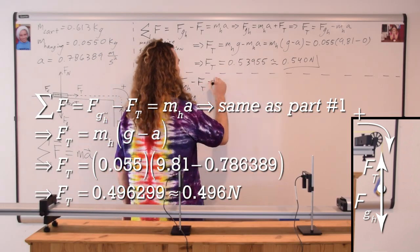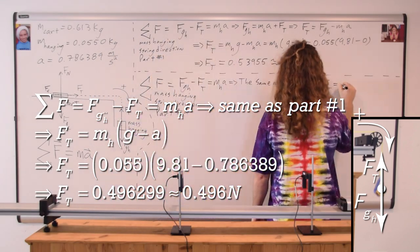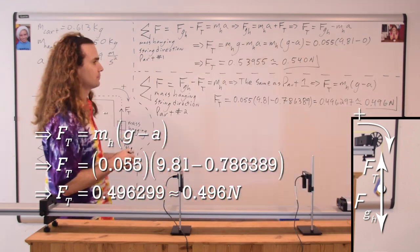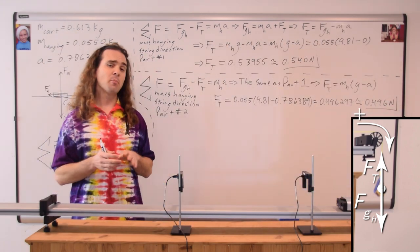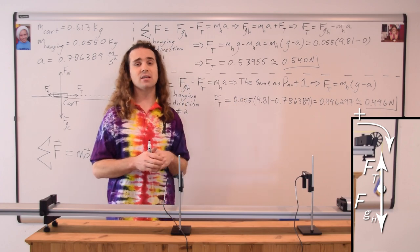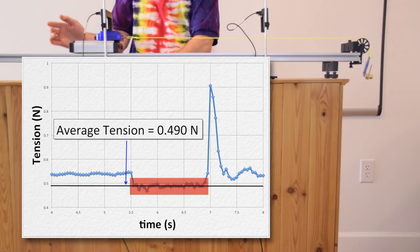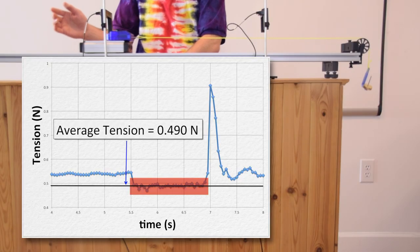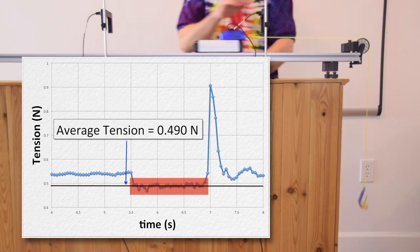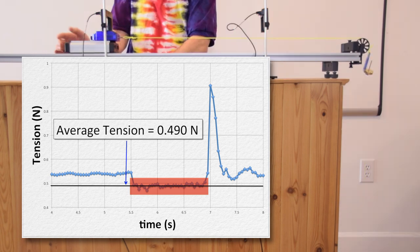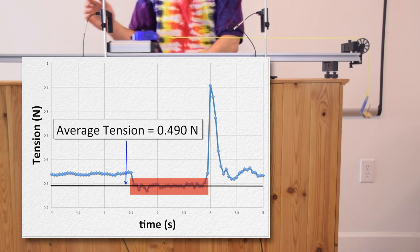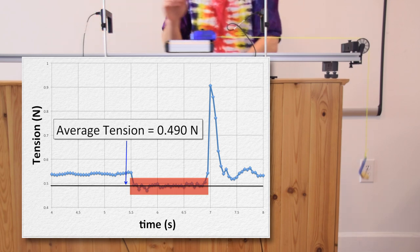We can compare the theoretically predicted value for the force of tension of 0.496 newtons to the experimentally observed value. They do not quite match — the experimentally observed value is 0.490 newtons, which differs by only six thousandths of a newton, which is pretty close.